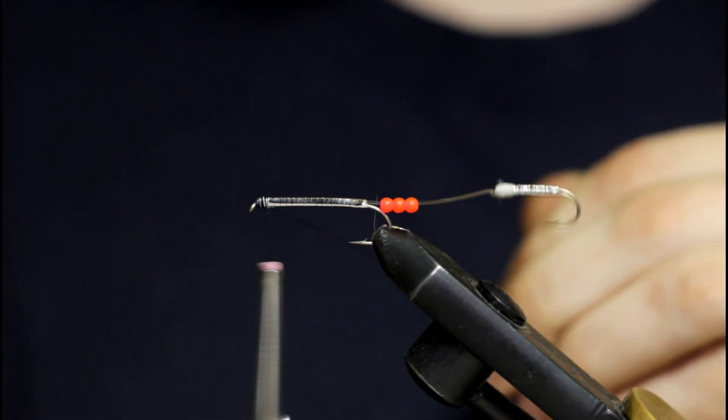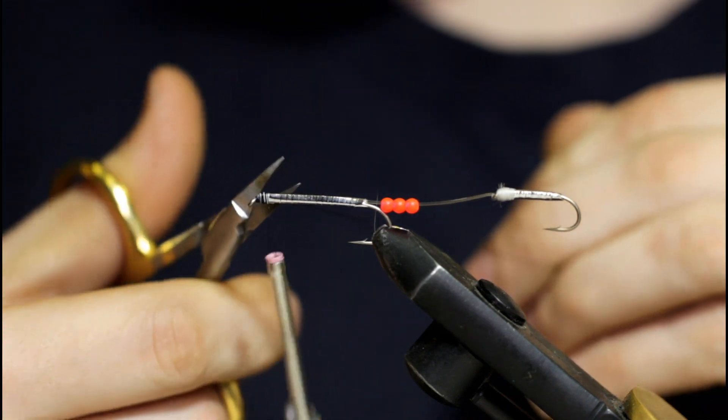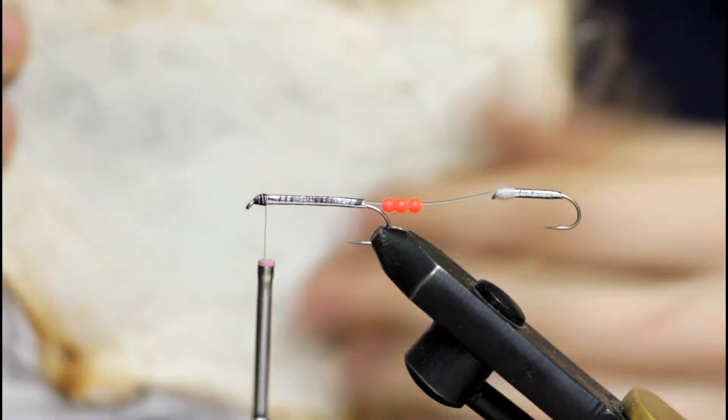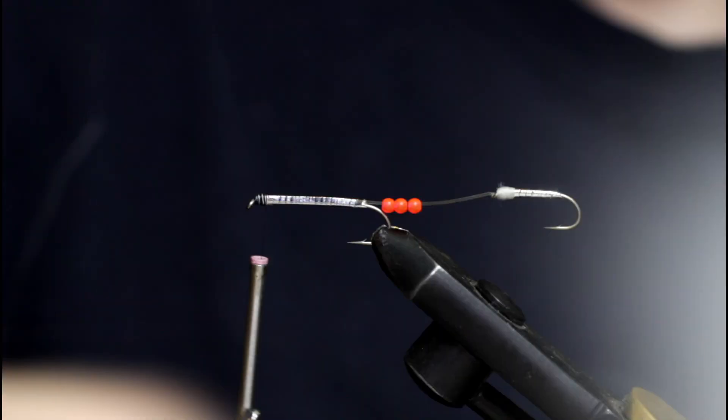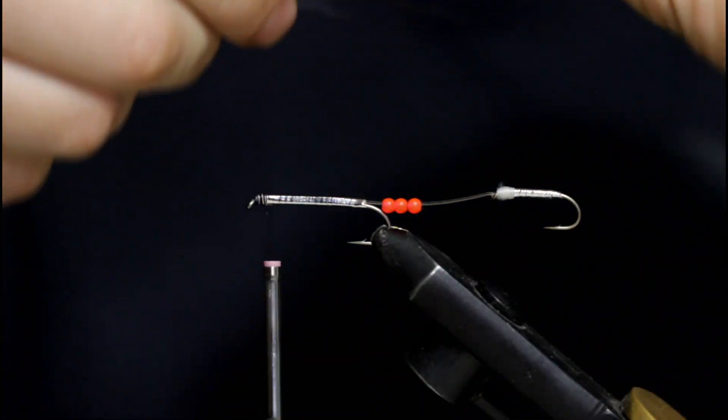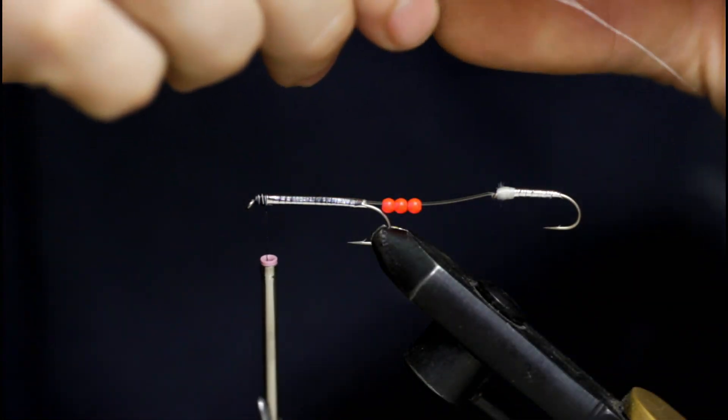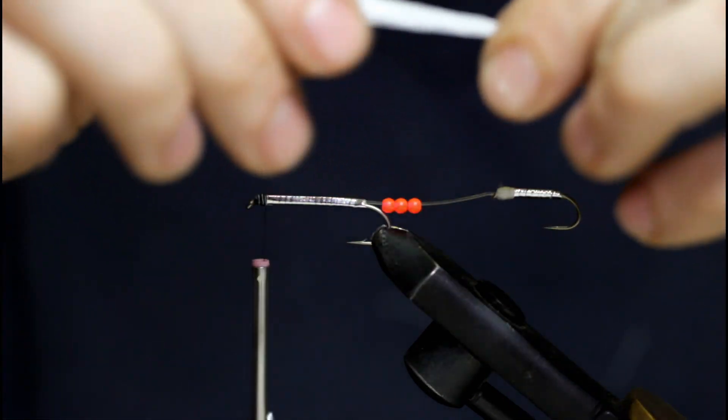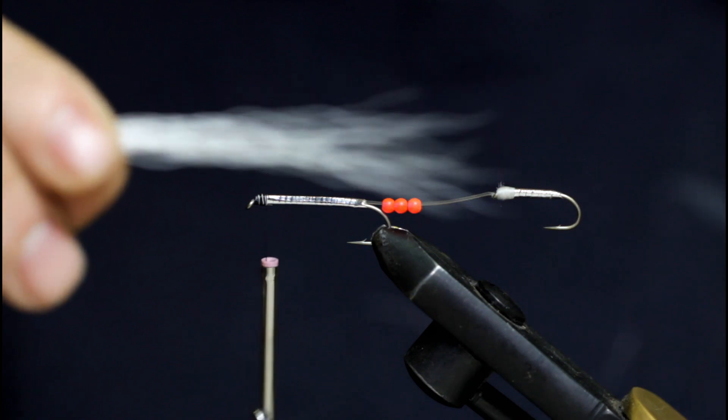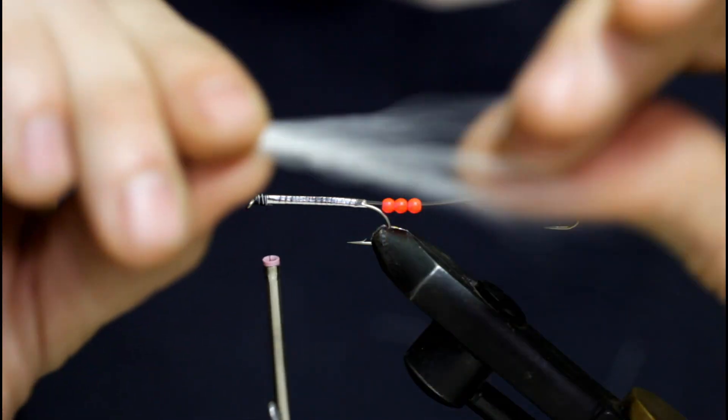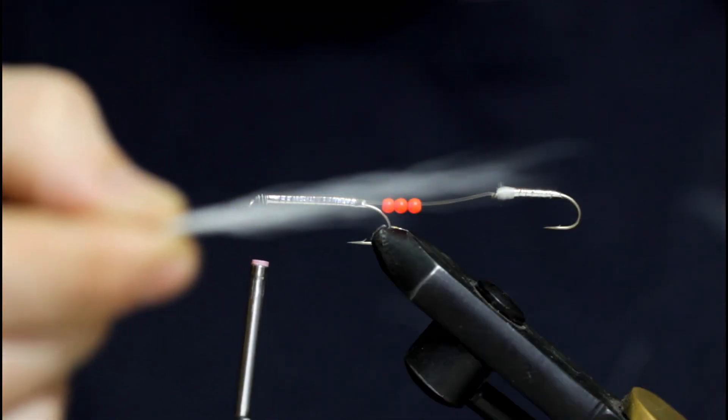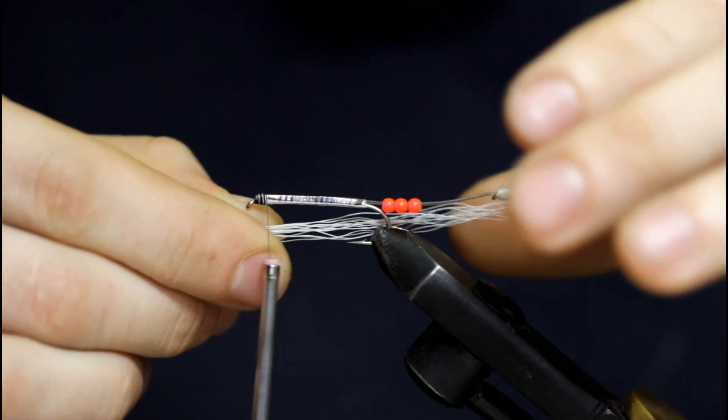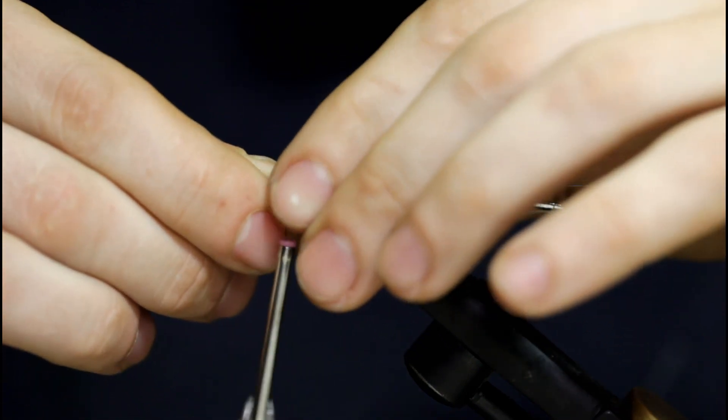So I'm coming in with some 70 denier UTC thread in black. I'm just going to put this on the hook eye, snip off the tag. I'm going to grab some white bucktail, well, some natural bucktail, and snip off the white from the insides here. Pull off these short, fuzzy hairs and long ones as well. You could stack your hair in this process. I'm just going to pull mine out.